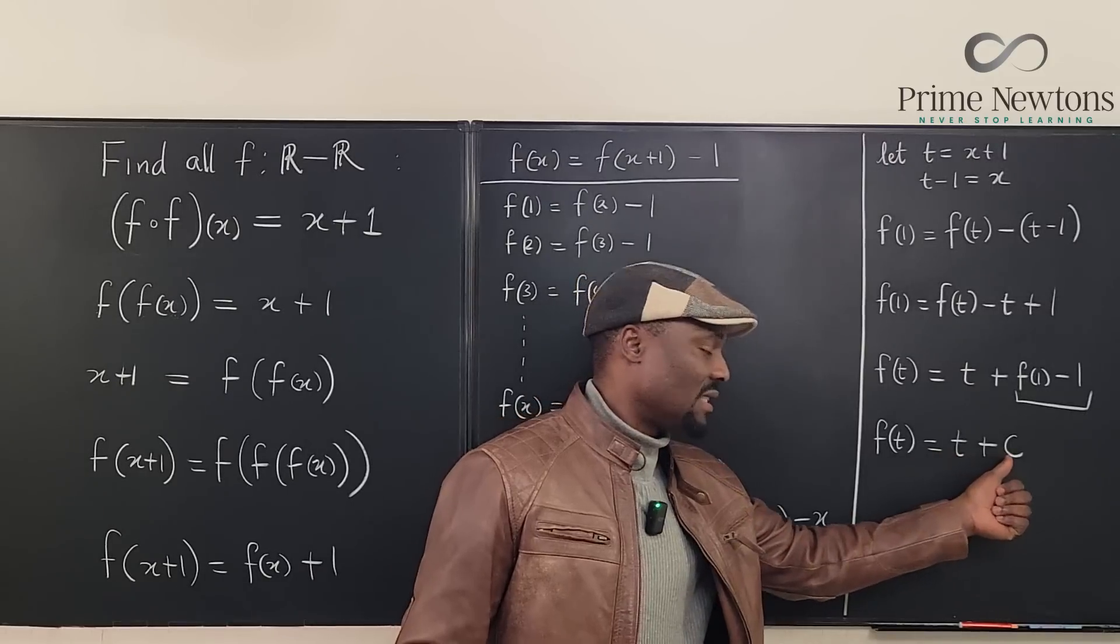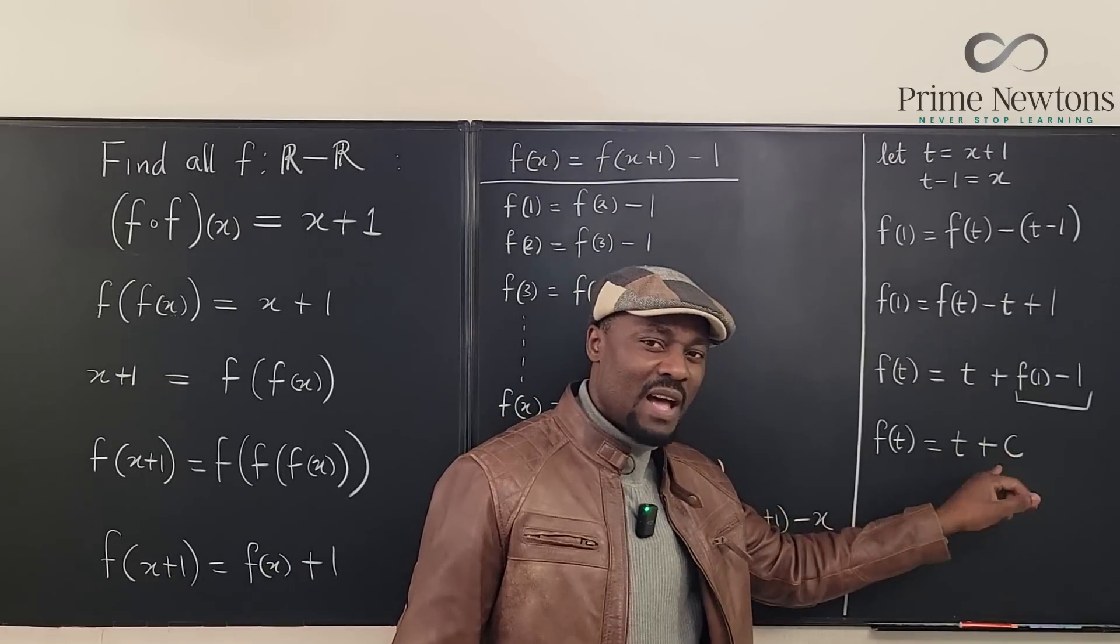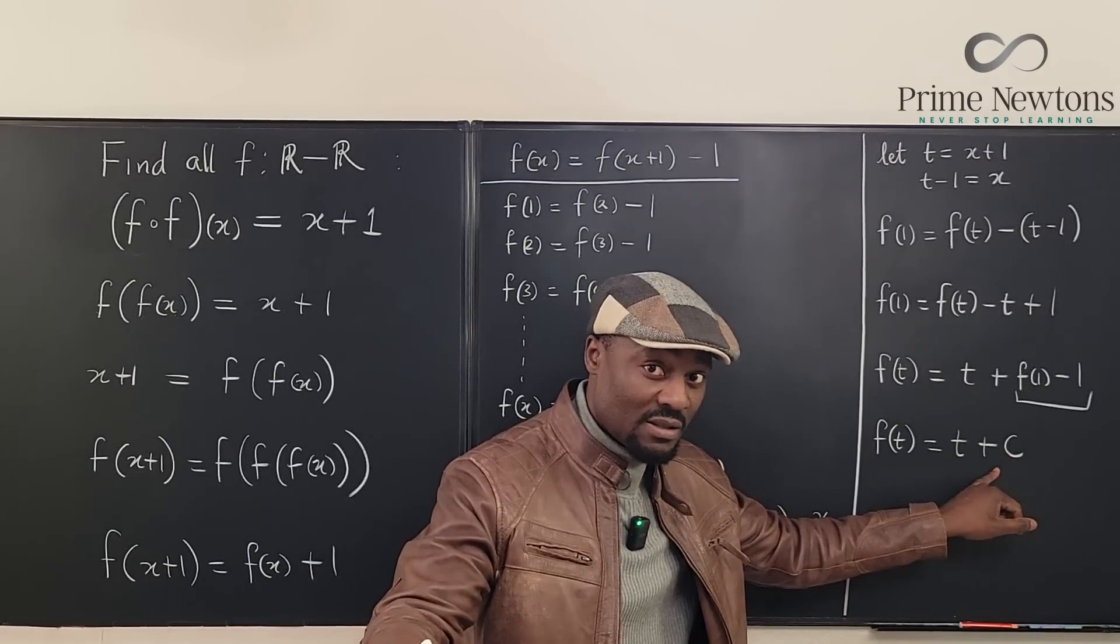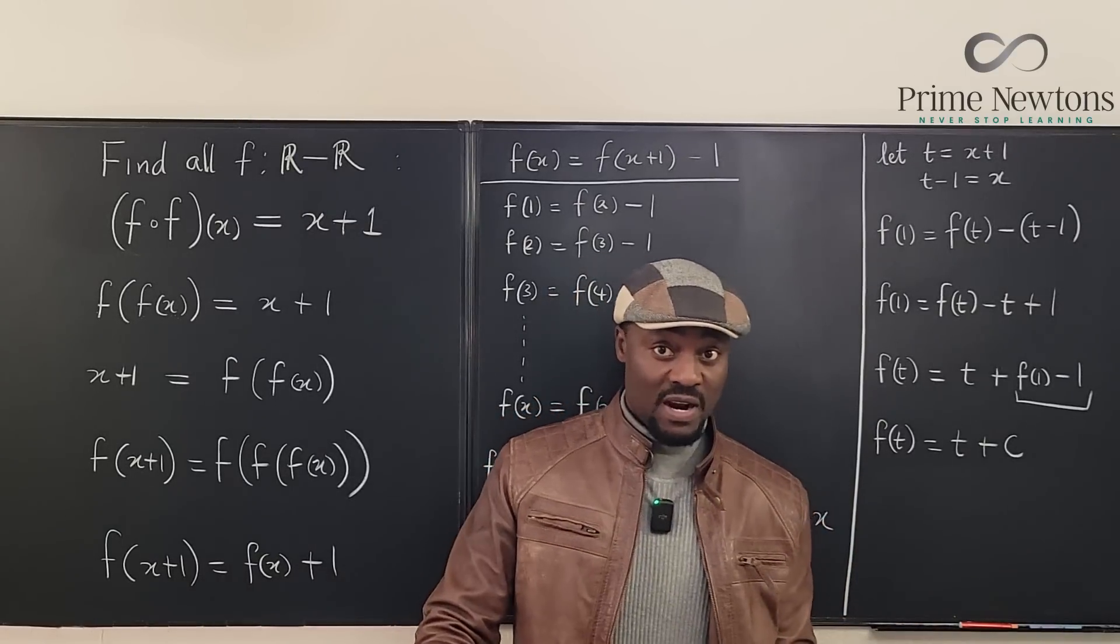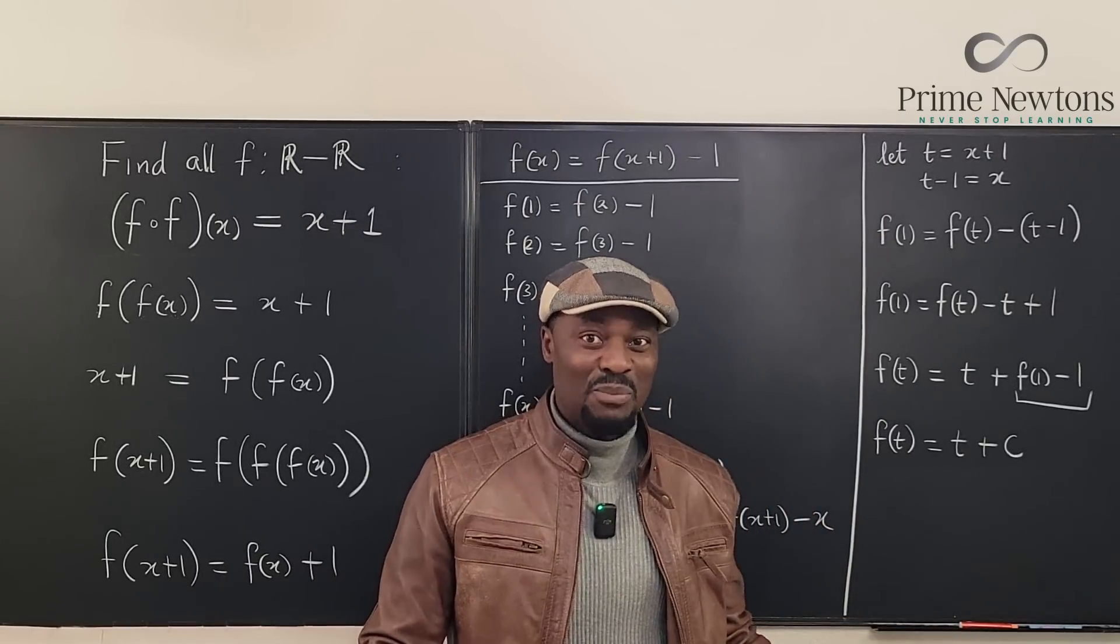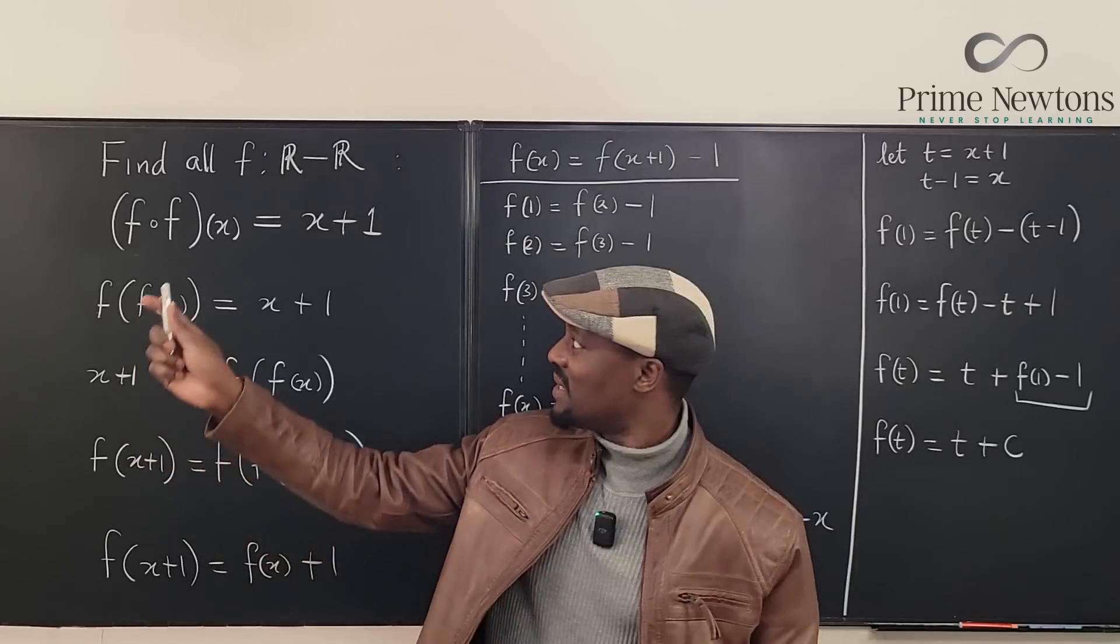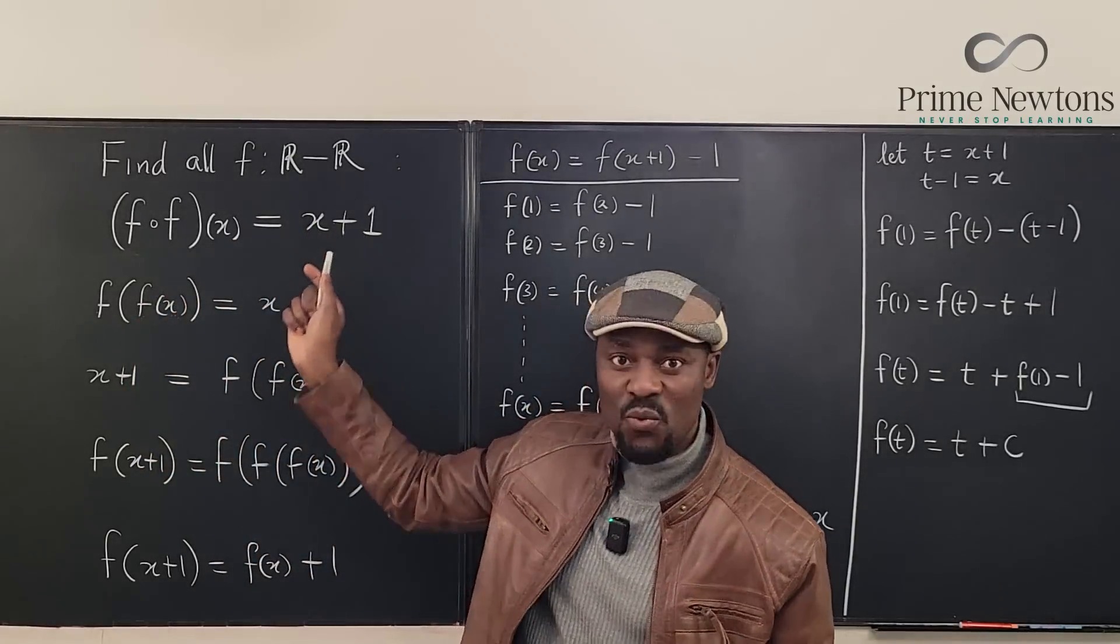Now, f of t is t plus c. Is it possible to find the value of c, which is the constant? In some other cases, you may not be able to find the c, you leave it in terms of c. But this one looks specific because it says it is x plus one.